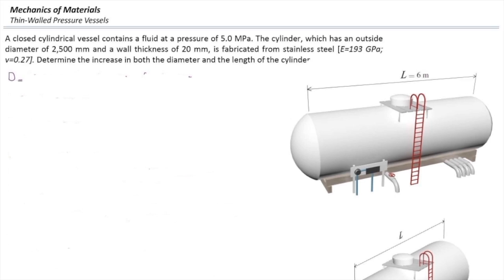First I'm going to write down the data that we have for this case. External diameter is 2,500 mm, wall thickness is 20 mm, and pressure is 5 megapascals. Internal diameter, which is the parameter that we use in our equation, is external diameter minus 2 times the wall thickness, and that would be 2,460. The radius would be half of that.